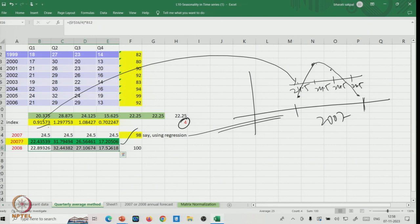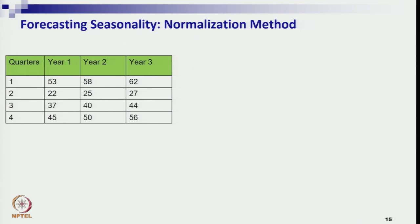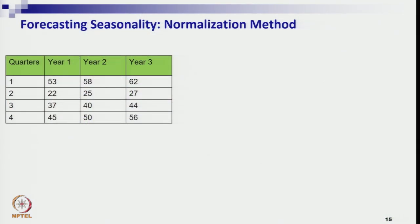You have understood the process of the seasonality index and the corresponding forecast using the simple average or quarterly average method. Now we will extend our discussion to the normalization method. This is another method sometimes followed by industry. It has only two or three steps and is quite easy to understand, but the process is different from the quarterly average method.